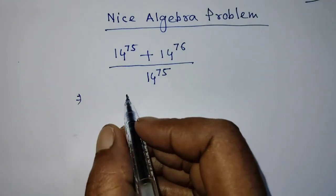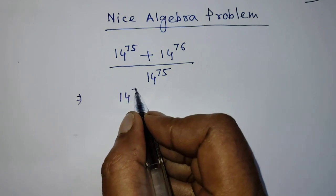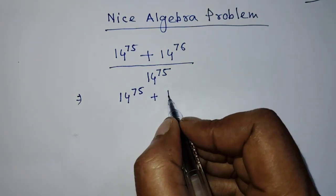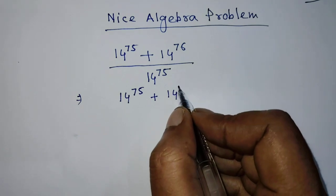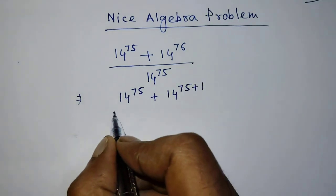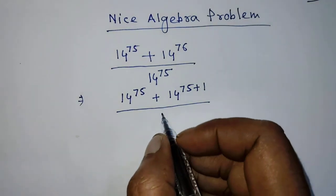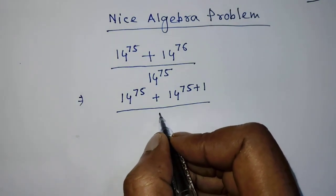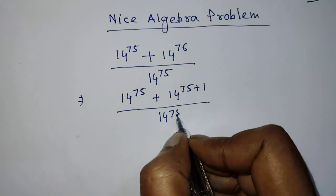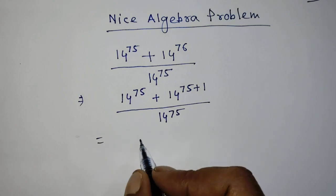In the first step of the solution, it will be 14 to the power 75 plus 14 to the power 75 plus 1, over 14 to the power 75 in the denominator.